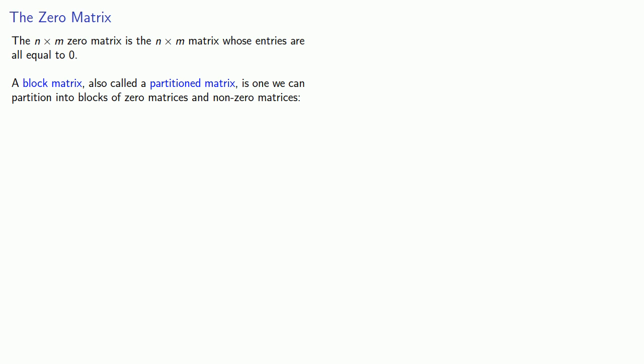There are also a couple of special matrices. So the N by M zero matrix is the N by M matrix whose entries are all equal to, no surprise, 0. And that by itself isn't particularly interesting, but it does allow us to define what's called a block matrix, also known as a partitioned matrix. And this is a matrix where we can partition it into blocks of 0 matrices and non-zero matrices. So this matrix can be partitioned, can be cut, into several pieces, where some of those pieces are 0 matrices and the others are not.